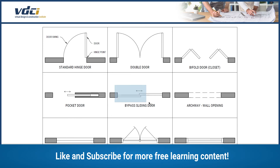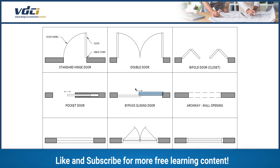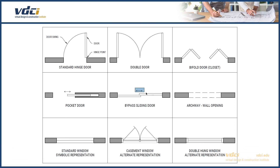Here is what they call a bypass sliding door. You can see the door here and the direction it moves. In some instances you'll also see an archway — you can see the wall here and the wall here, and then there's a dashed or hidden line that shows the line of the archway or the opening above.